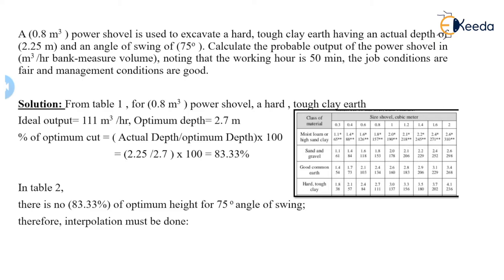We will find the percent of optimum cut as actual depth upon the optimum depth multiplied by 100. We will get 2.25 upon 2.7 into 100, that is 83.33%.